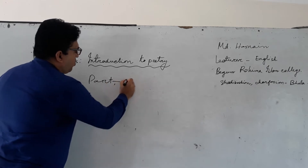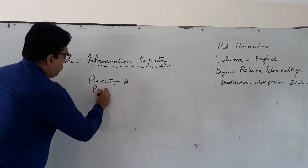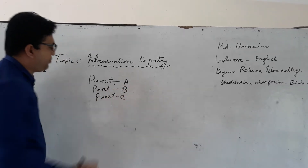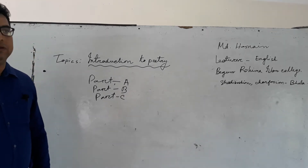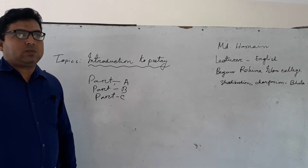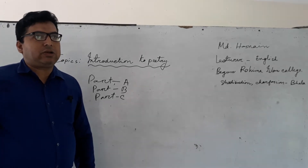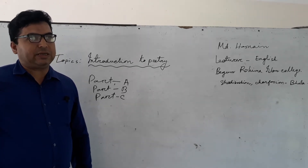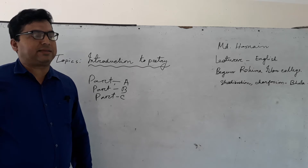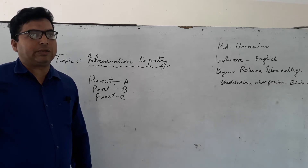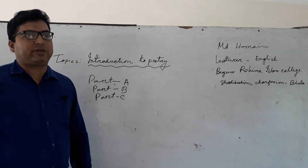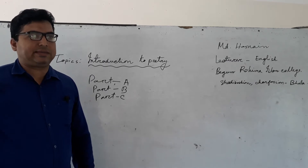Part A is the big question. There are 20 questions that will be set. Every student will answer 10 questions. Every question is 1 mark. Total 10 marks. Part B is the short question. 8 questions are set. Every student will answer 5 questions. Every question is 4 marks. Total 20 marks.